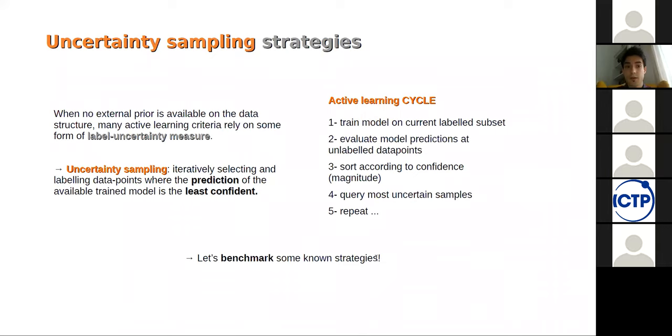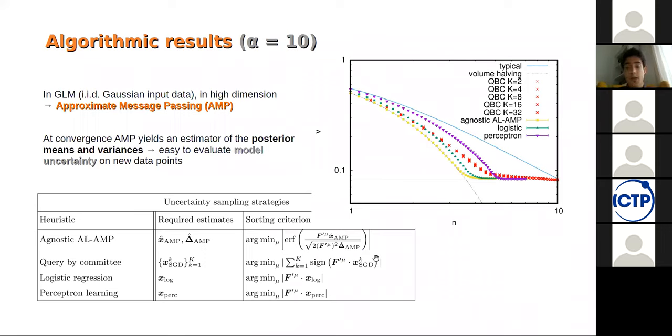In the case where you have no prior information about the generative process, the most information you can get from every pattern is, of course, one bit of information because that's the sign of the pattern you're actually querying. This is represented by the volume halving curve, which is the dotted black line in this plot. Still, if you even stick to this curve, you're extracting information with a logarithmic number of patterns with respect to the entire pool of patterns. In this case where you have no information on the structure of the patterns, we talk about algorithmic strategies that are usually employed to do active learning. The most common one is called uncertainty sampling.